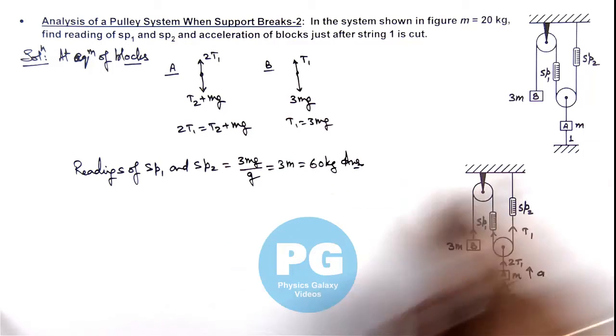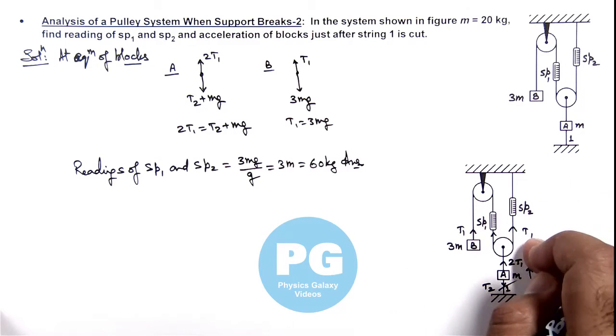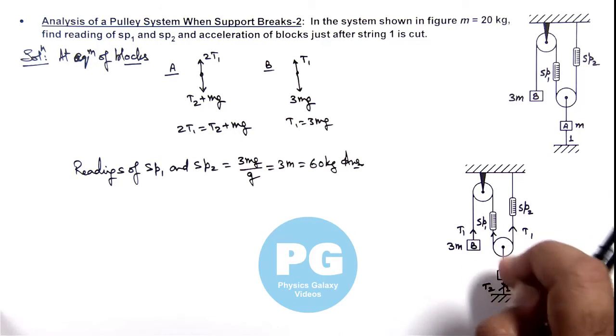That means in equilibrium the reading is 60 kg, and just after string 1 snaps, the reading of spring balances will not change as due to inertia of blocks they won't displace at the initial moment.